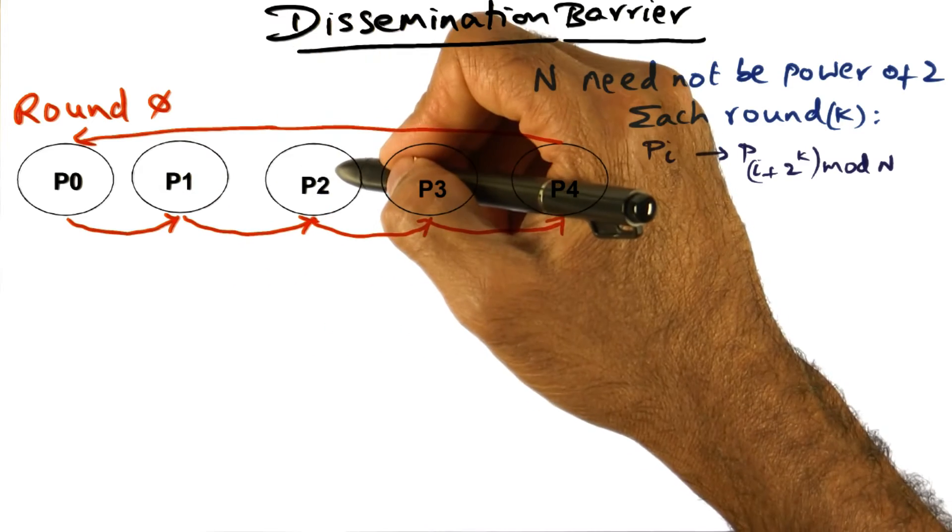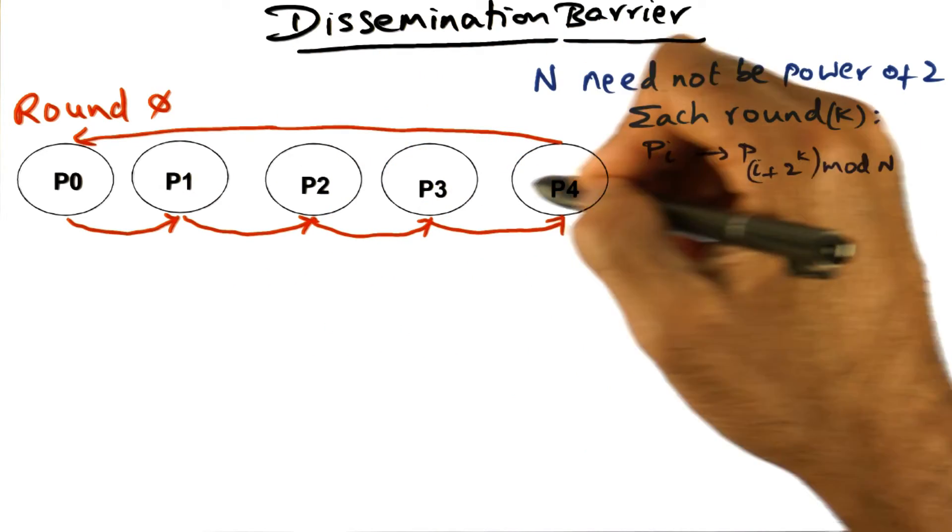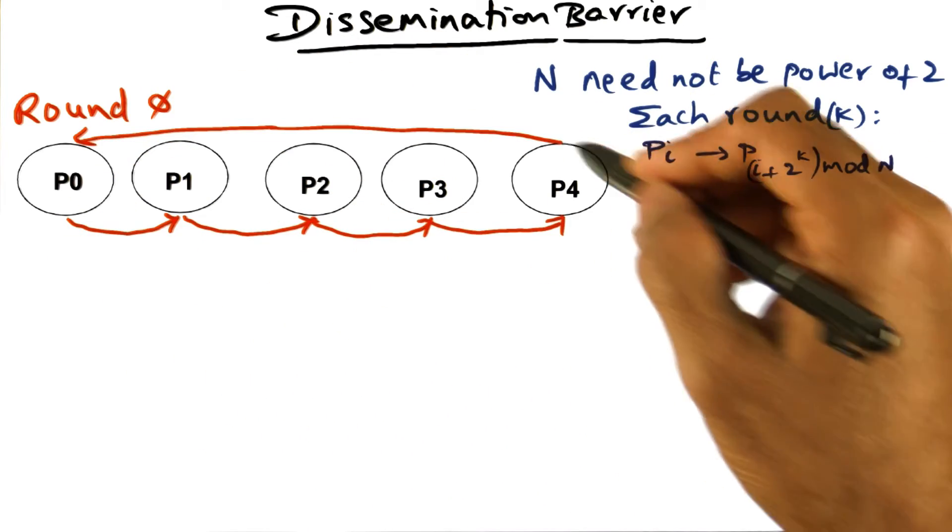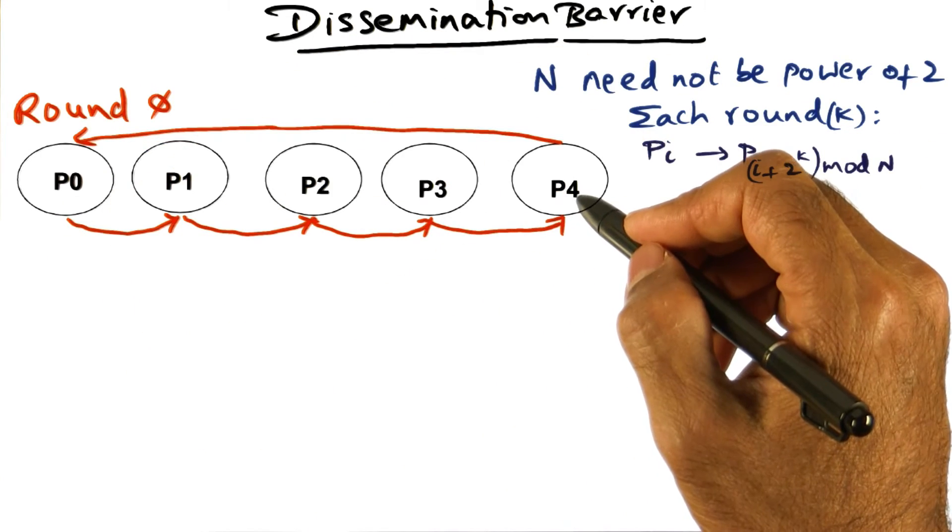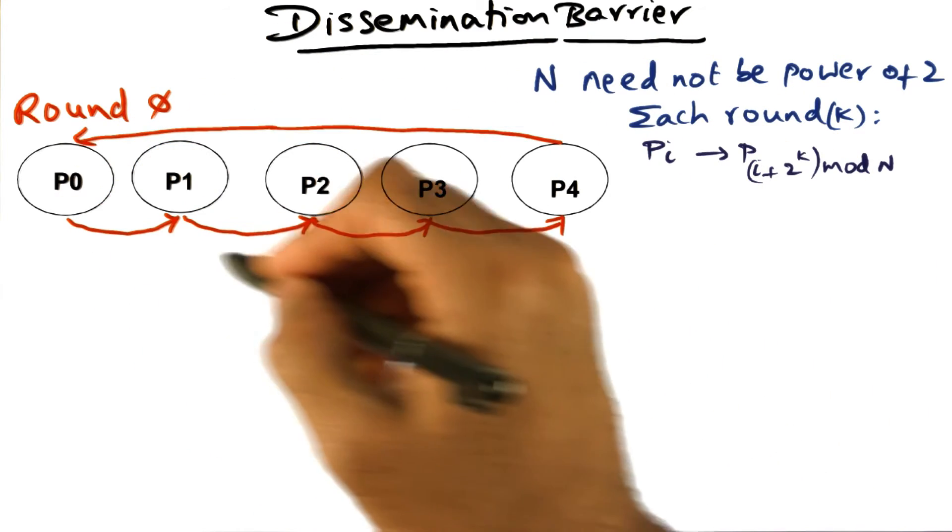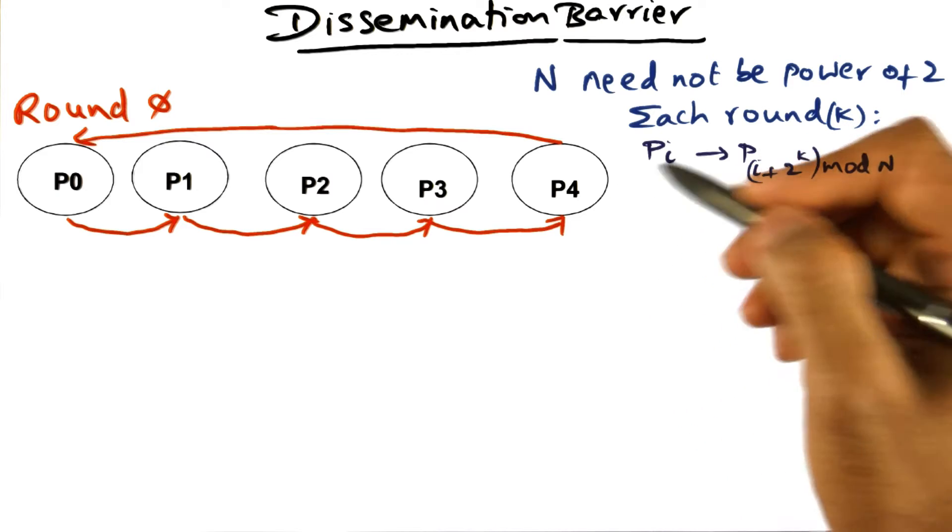Similarly, p1 sends a message to p2, p2 sends to p3, and p3 to p4. The arrangement is that this is cyclically arranged, so if p4 needs a neighbor, it's going to be in the cyclic order, whoever is the next neighbor.